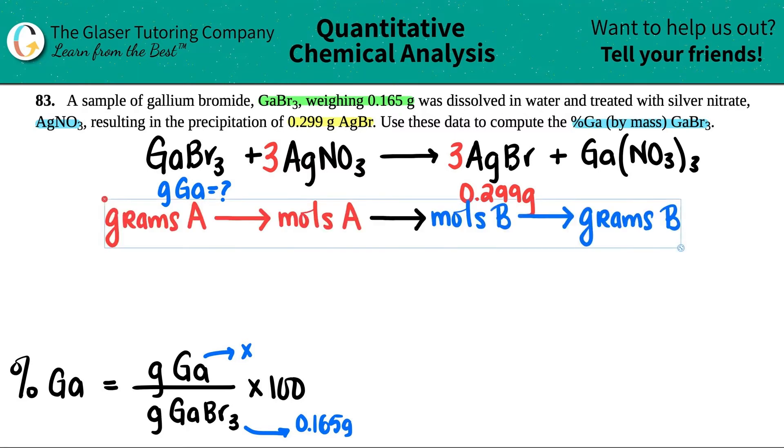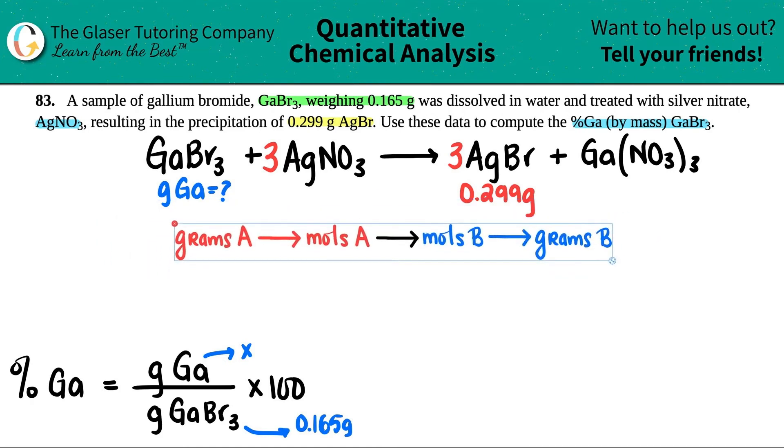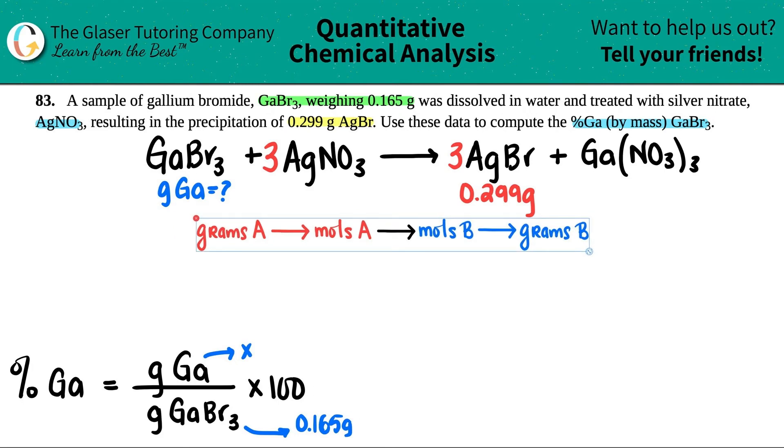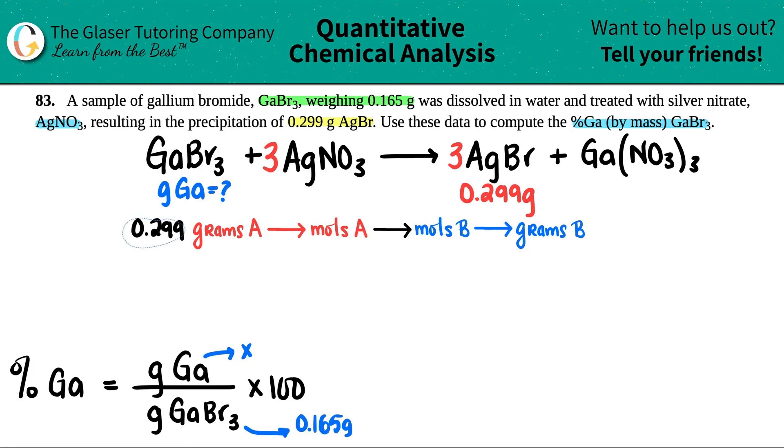What's the flow chart? It's grams to moles to moles to grams. So I'm going to always start with my given. In this case, it's going to be 0.299 grams of the AgBr. I could go to moles of AgBr. Now I'm going to convert over. Specifically, I want to find out how many grams of the gallium. So ultimately, I want to get to moles of gallium and then grams of gallium.